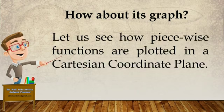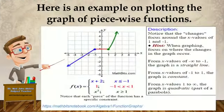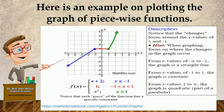Okay, how about its graph? Let us see how piecewise functions are plotted in the Cartesian coordinate plane. Here is an example on plotting the graph of piecewise functions. Notice that the changes focus around the x value of 1 and negative 1. When graphing, focus on where the changes in the graph occur. From x value of negative infinity to negative 1, the graph is a straight line. From x value of negative 1 to positive 1, the graph is constant. And from x values of 1 to positive infinity, the graph is quadratic — that is a part of a parabola.